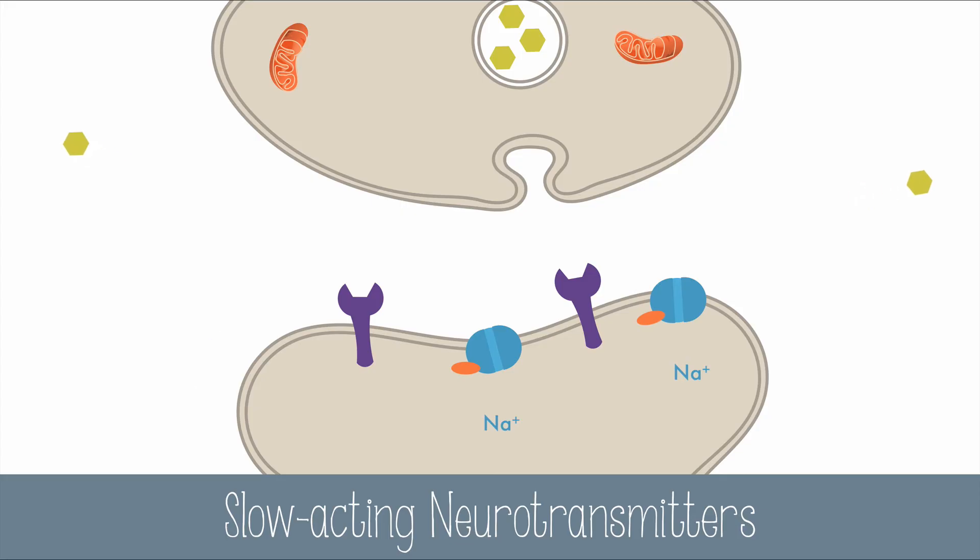Slow-acting neurotransmitters will modulate the actions of fast synaptic transmissions for relatively long periods of time, like minutes or even days. Slow-acting neurotransmitters include dopamine, serotonin, and noradrenaline.